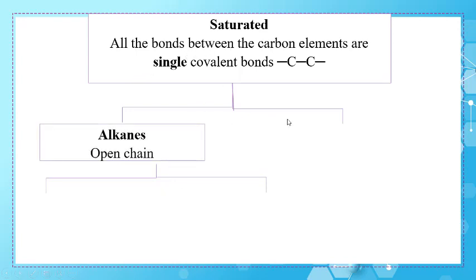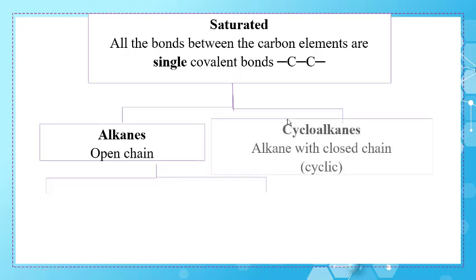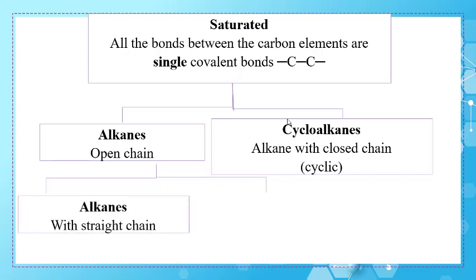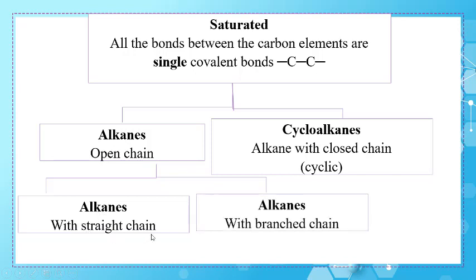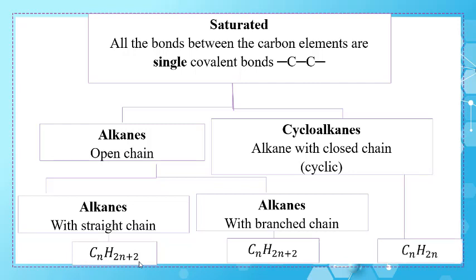Saturated hydrocarbons can be classified into alkanes with open chains and cycloalkanes which are alkanes with closed or cyclic chains. Alkanes with open chains can further be classified into alkanes with a straight chain and alkanes with a branched chain. The general formula for both is CₙH₂ₙ₊₂, while the general formula for cycloalkanes is CₙH₂ₙ.